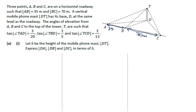It tells us that a vertical mobile phone mast DT has its base D at the same level of the roadway. So we're going to have right angle triangles here, because we have this vertical pole and we have the horizontal ground.